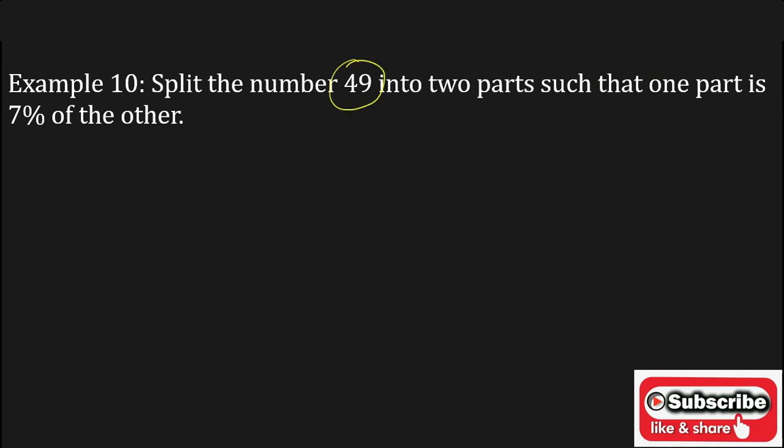Split the number 49 into 2 parts such that one part is 7% of the other.